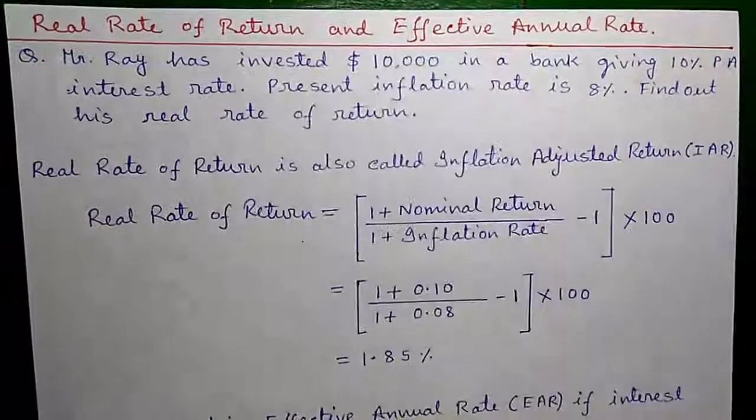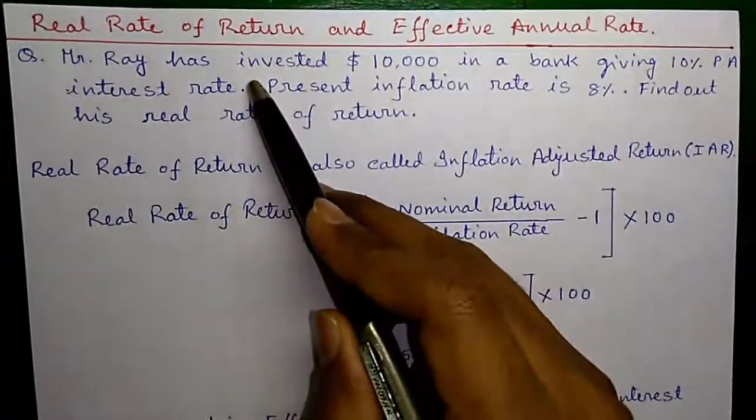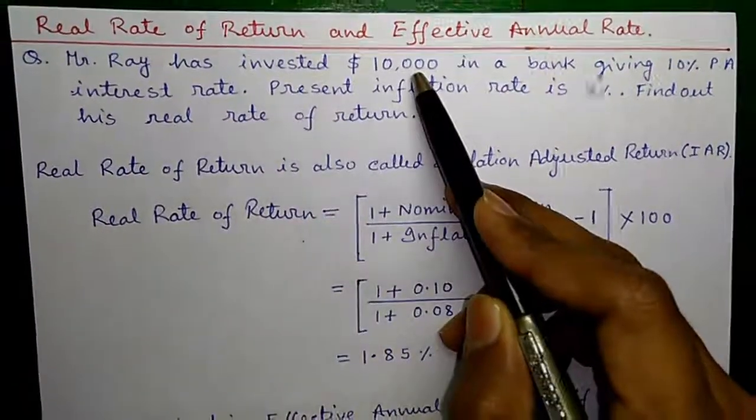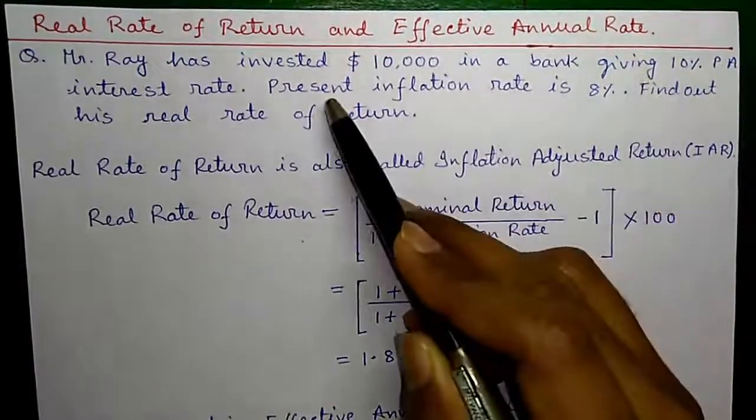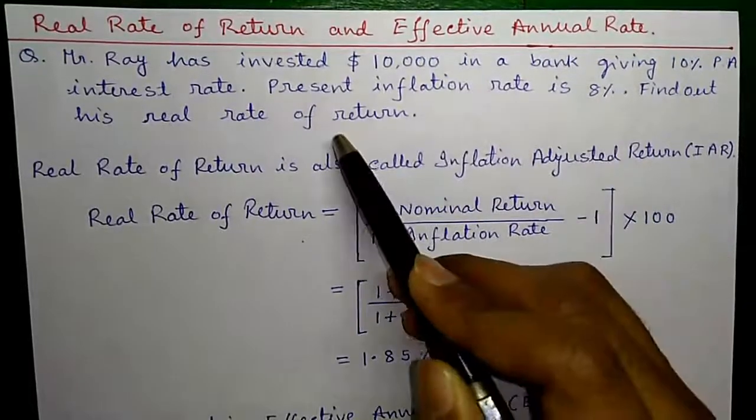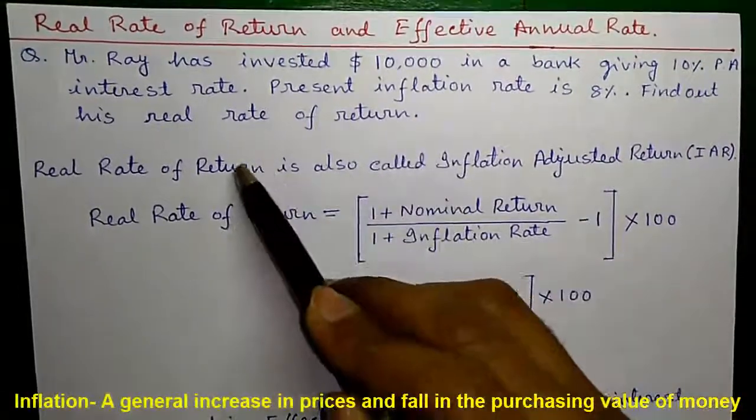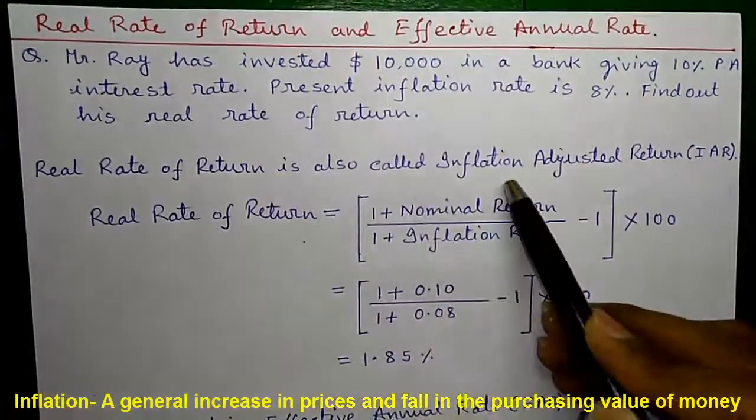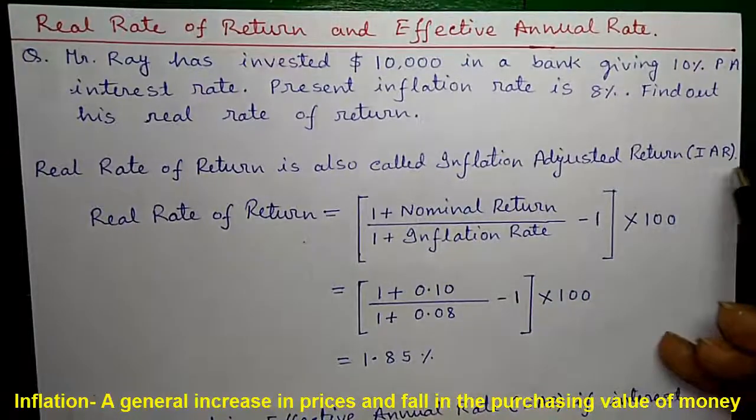So let's start. Question 1. Mr. Ray has invested $10,000 in a bank giving 10% per annum interest rate. Present inflation rate is 8%. Find out his real rate of return. Real rate of return is also called inflation adjusted return or IAR.